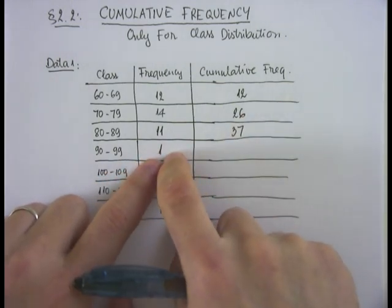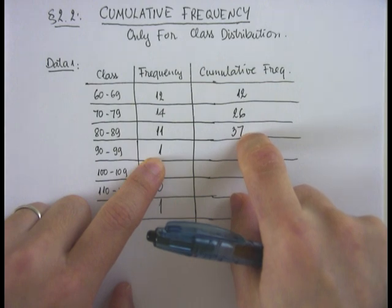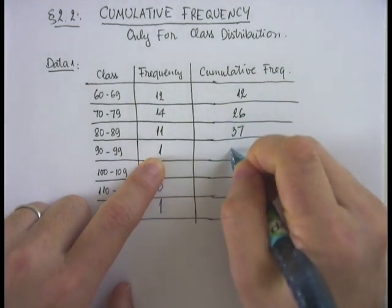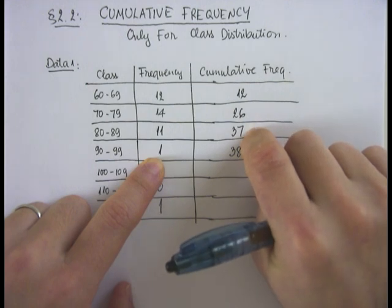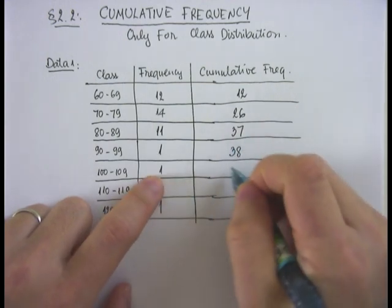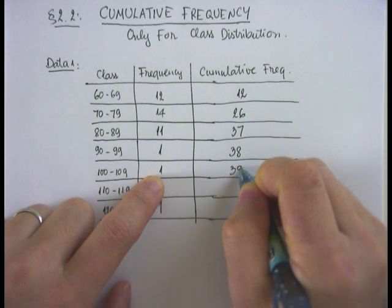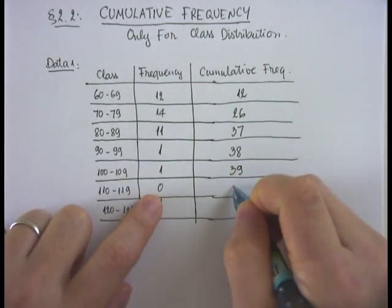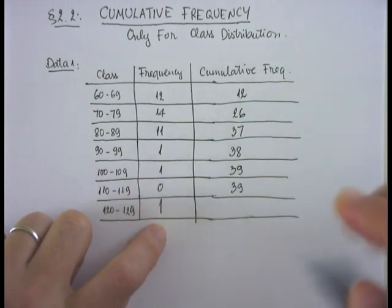The next class down contains one, and together with what we have cumulatively so far, it's 38. The next one adds one more giving 39, and here it's 39 again because this class has zero frequency, and the last class gives 40.